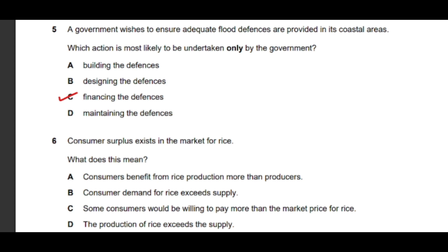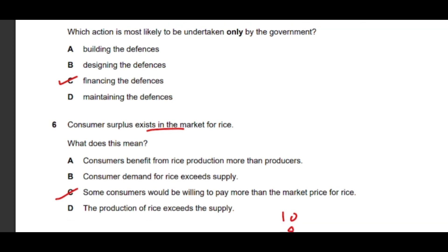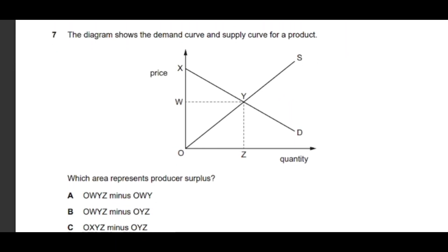Question number six: consumer surplus exists in a market for rice — what does this mean? Option C is correct: some consumers would be willing to pay more than the market price for rice. Consumer surplus is the difference between what consumers are willing to pay and the market price. For example, if a consumer is willing to pay $10 but gets rice for $8, the $2 saved is consumer surplus.